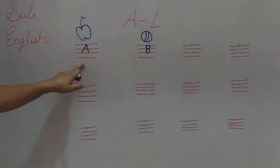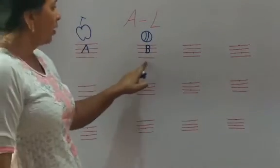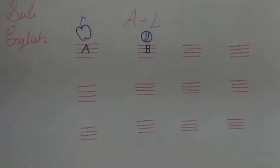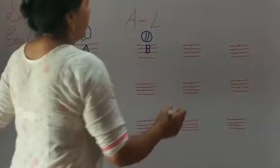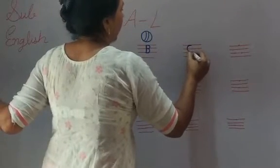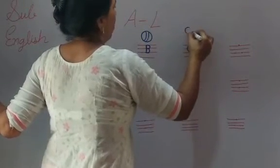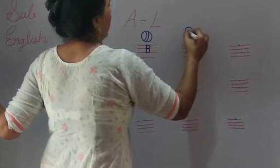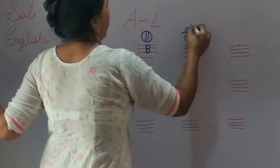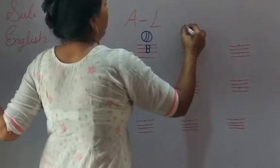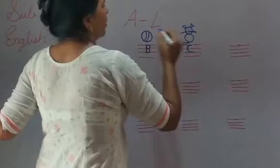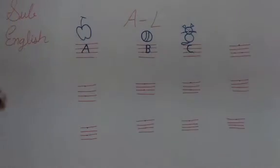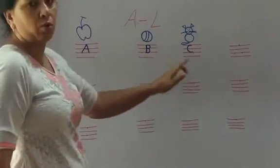A. A for apple. B. B for ball. Now, C. C for cat. Here we draw a picture of cat. You can draw pictures also. It's your own choice.